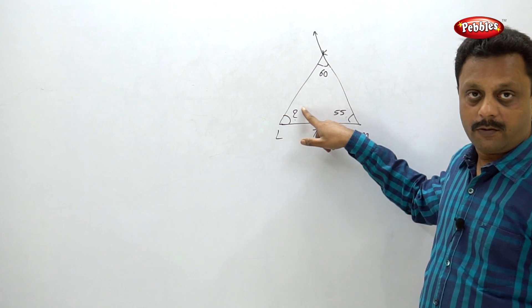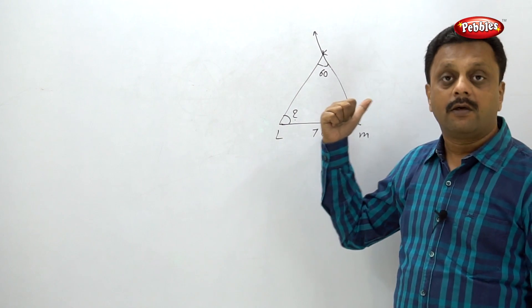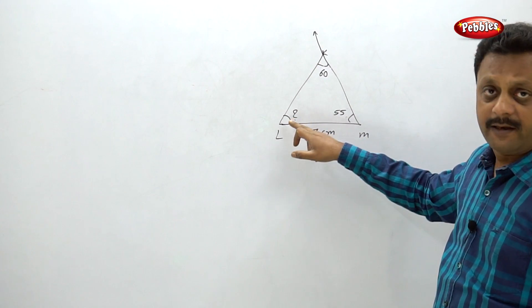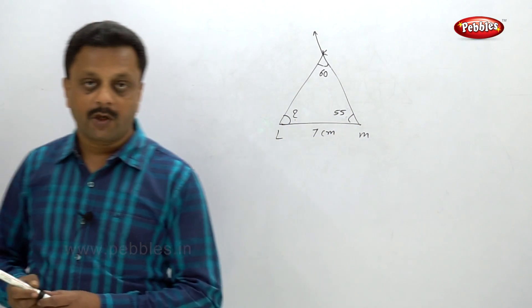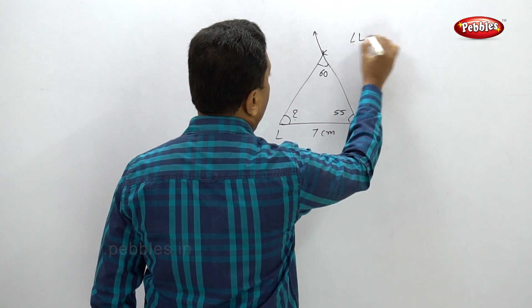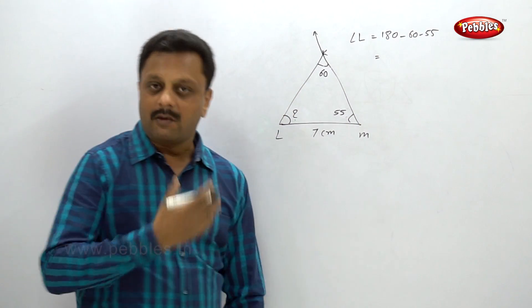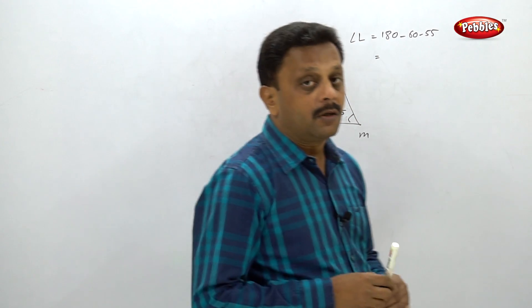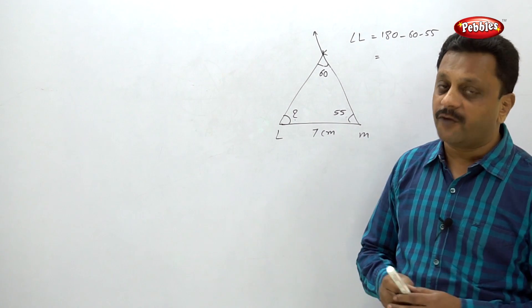Once you find angle L, draw LM as 7 centimeters, draw the 55-degree angle at M, draw the calculated angle at L, and the point of intersection will be point K. You must show the calculation: angle L equals 180 minus 60 minus 55. Please pause your video here and complete the construction of the first three examples before moving on.